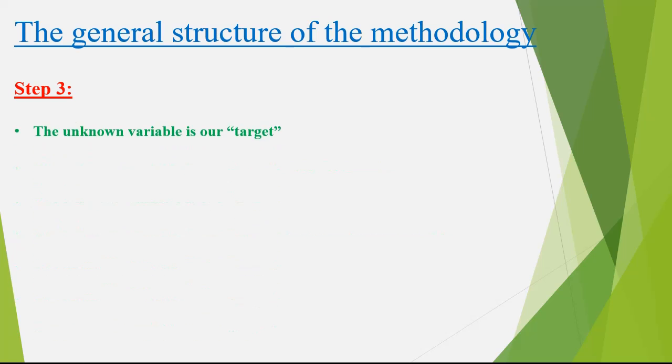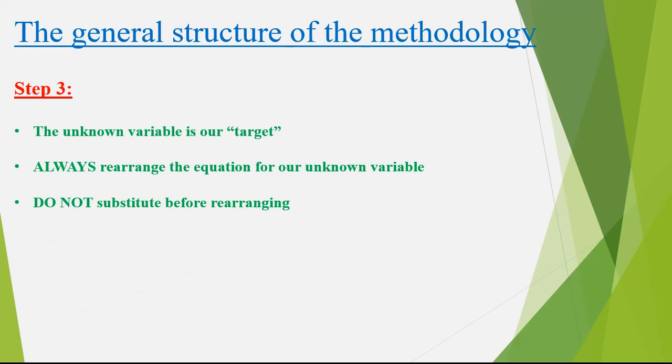Step number three: The unknown variable or proof condition becomes our target. We always rearrange the equation to solve for that variable first, before we do any data substitution. This is absolutely necessary to prevent possible error transfers, and also lets the learner practice for theoretical exercises without numerical data.